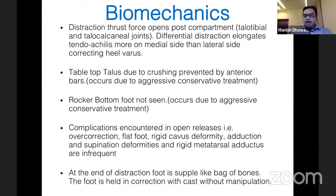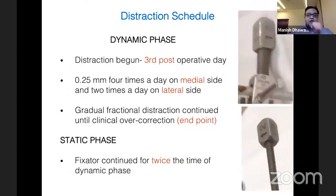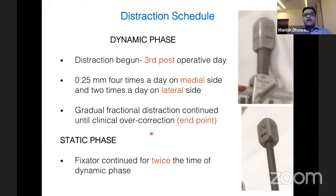At the end of distraction, the foot is supple like a bag of bones and is held in correction with a cast without manipulation. Distraction begins on the third postoperative day at 0.25 mm four times a day on the medial side and twice on the lateral side. Gradual fractional distraction continues until clinical overcorrection is achieved — that is the endpoint.